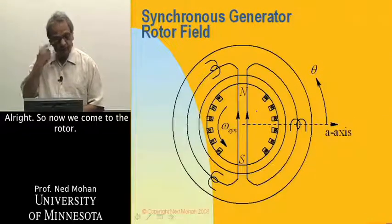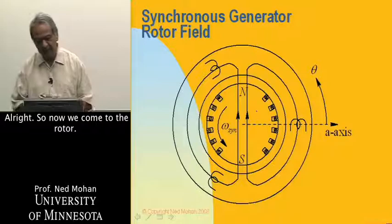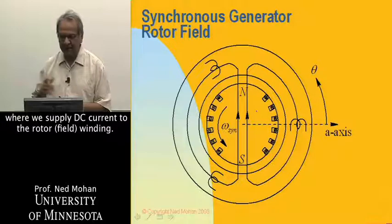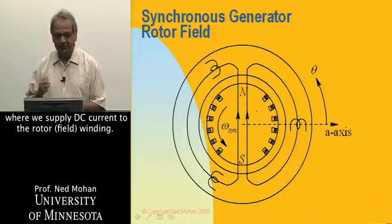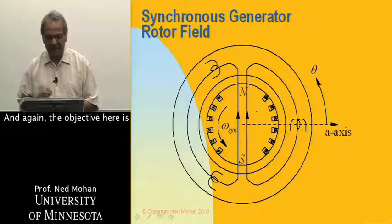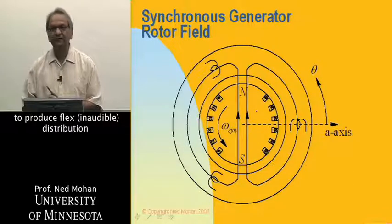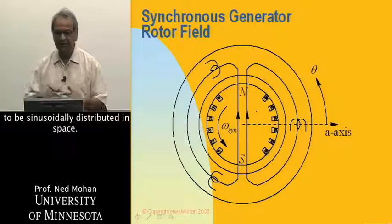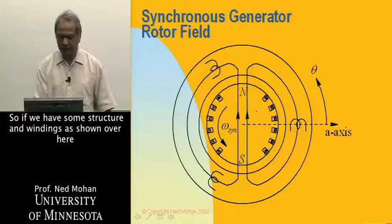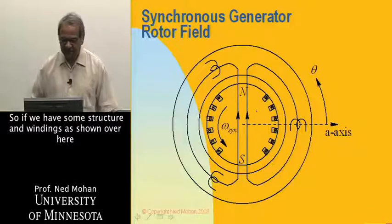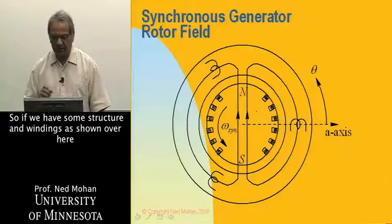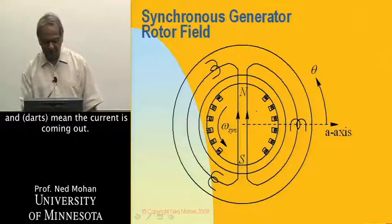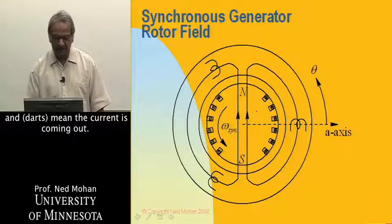So now we come to the rotor. And also on the rotor, usually these are wound rotor machines where we supply DC current to the rotor field winding. And again, the objective here is to produce flux density distribution because of this rotor current to be sinusoidally distributed in space. So if we have some structure and windings as shown over here where crosses are showing currents going into it and darts,